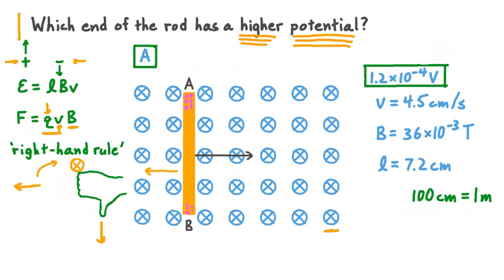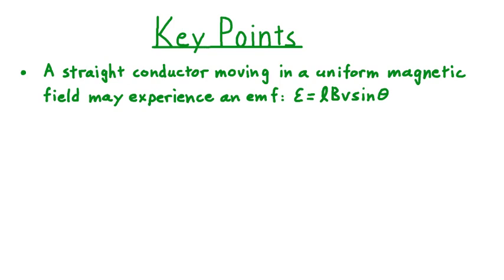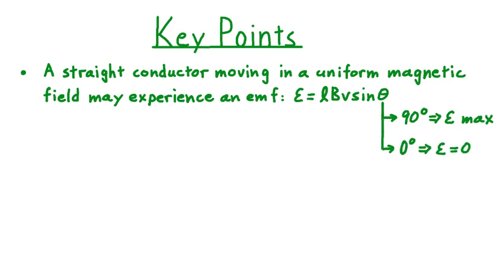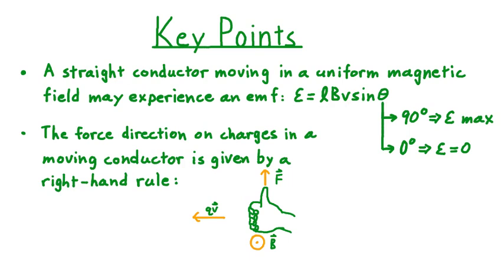Let's summarize what we've learned in this lesson. A straight conductor moving in a uniform magnetic field may experience an EMF, given by the product of the conductor's length times the magnetic field strength times its speed times the sine of the angle between the magnetic field lines and the direction the conductor is moving. EMF is maximum when the conductor moves perpendicularly to the field — theta equals 90 degrees — and zero when the conductor moves parallel to the field. The direction of force on charges in a moving conductor is given by the right-hand rule. When our moving conductor is part of a closed circuit, the EMF it generates can drive current in that circuit, where the total circuit resistance is given by R.